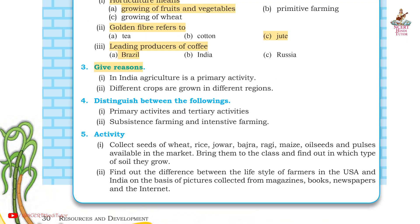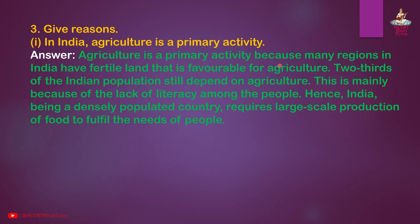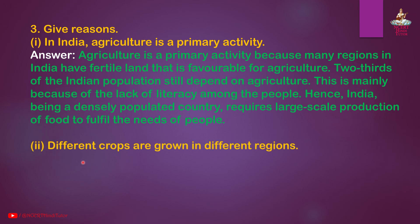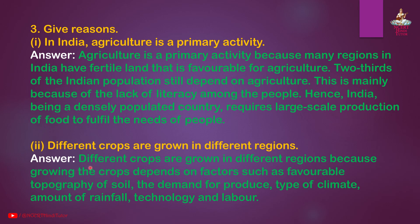Section 3: Give reasons. First, in India, agriculture is a primary activity. Answer: Agriculture is a primary activity because many regions in India have fertile land favorable for agriculture. Two-thirds of the Indian population still depend on agriculture, mainly due to lack of literacy. India, being a densely populated country, requires large-scale production of food to fulfill the needs of people. Second, different crops are grown in different regions because growing crops depends on factors such as favorable topography of soil, demand for produce, type of climate, amount of rainfall, technology, and labor.